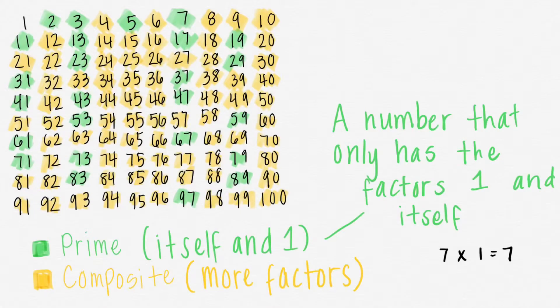A prime number is a number that only has the factors 1 and itself. For example, the number 7. The only way to get the number 7 is to do 7 times 1. There's no other numbers you can multiply together to get 7.